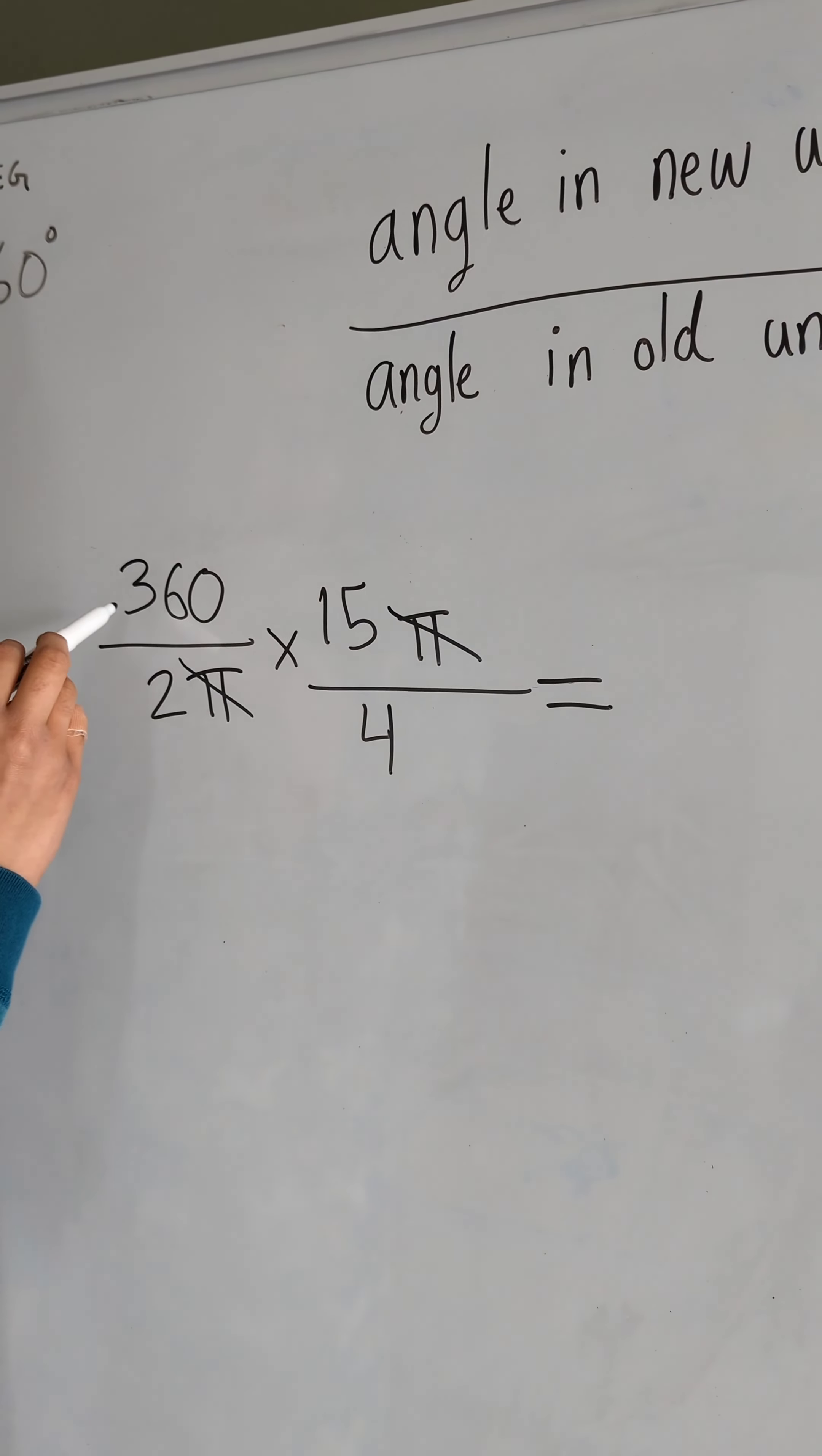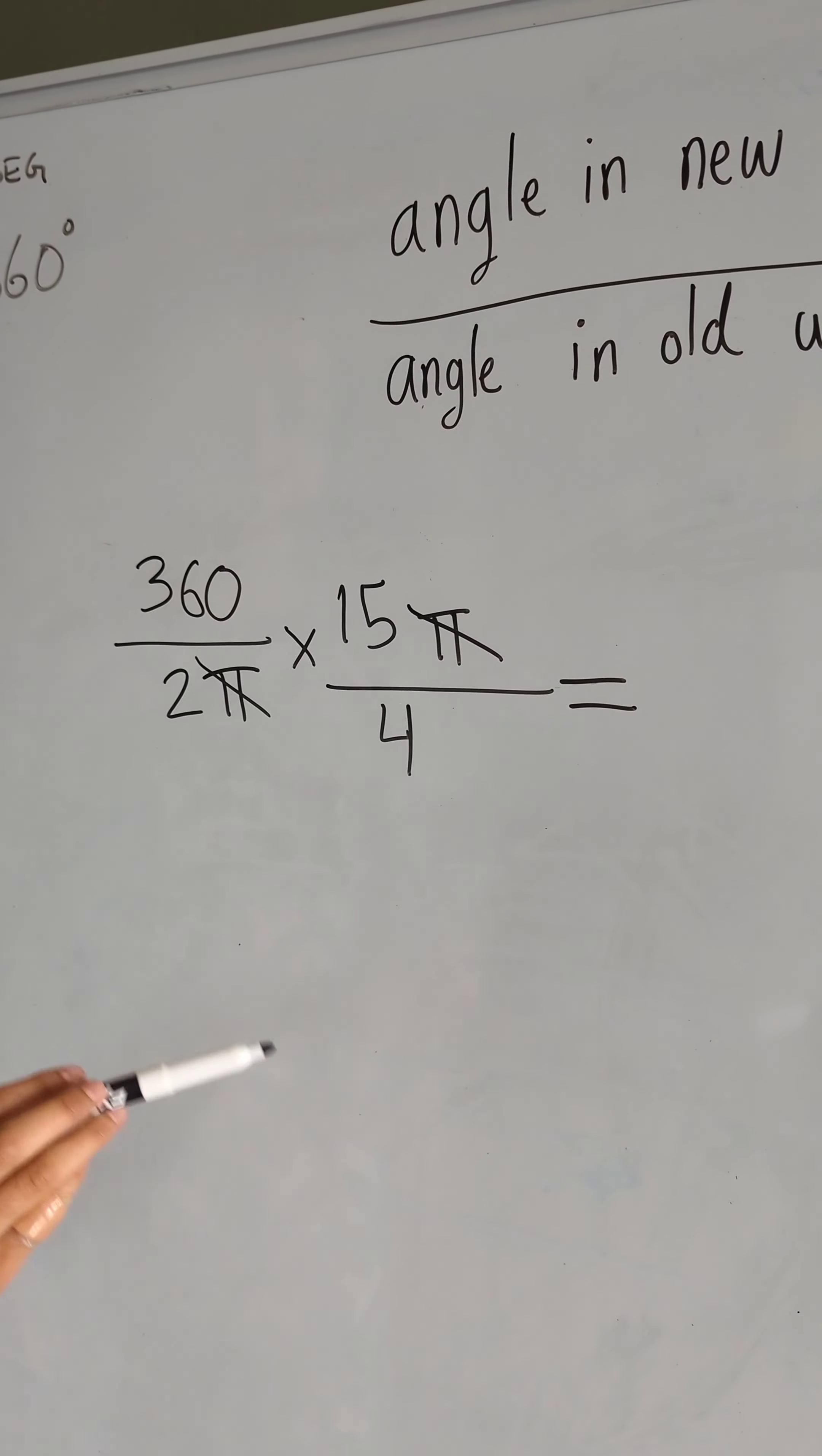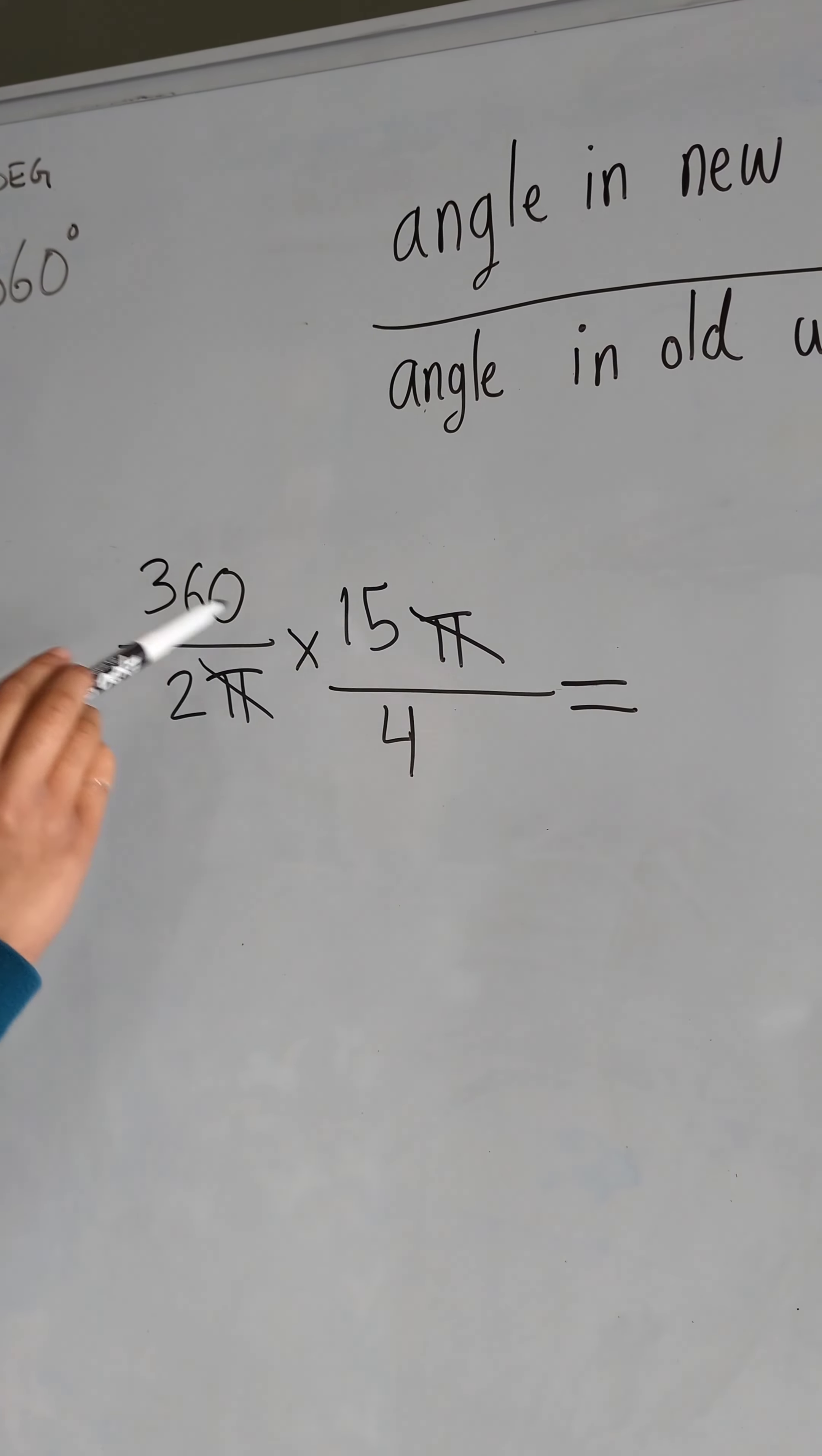Our equation is left with 360 divided by 2 times 15 divided by 4. There's another thing. Can you find what it is?